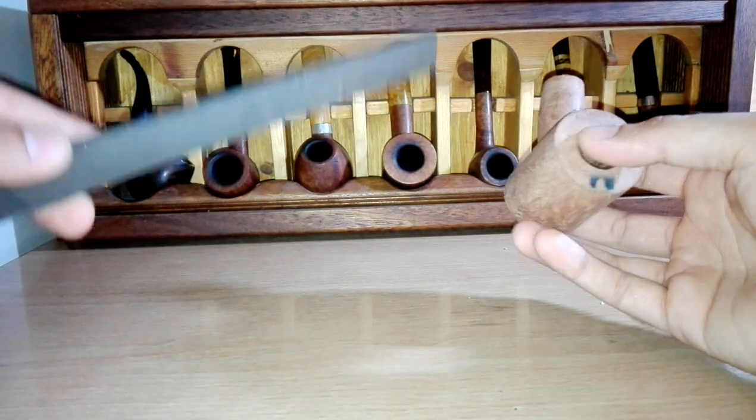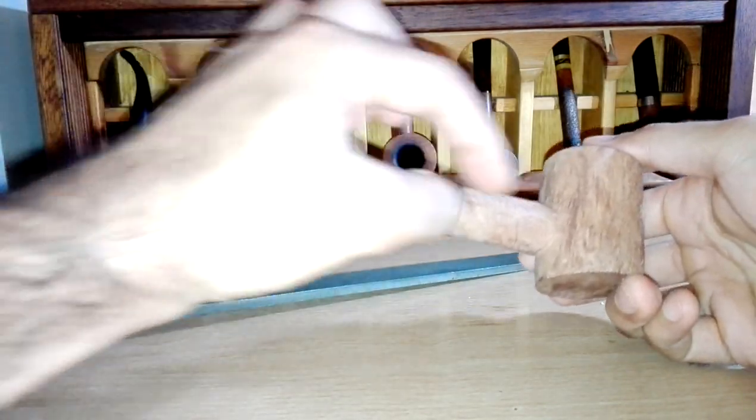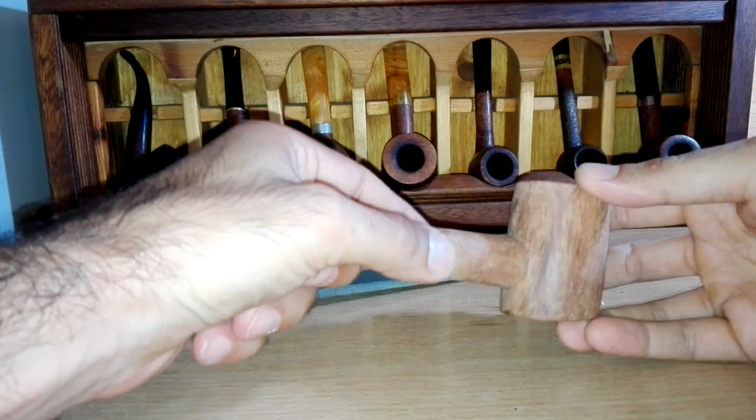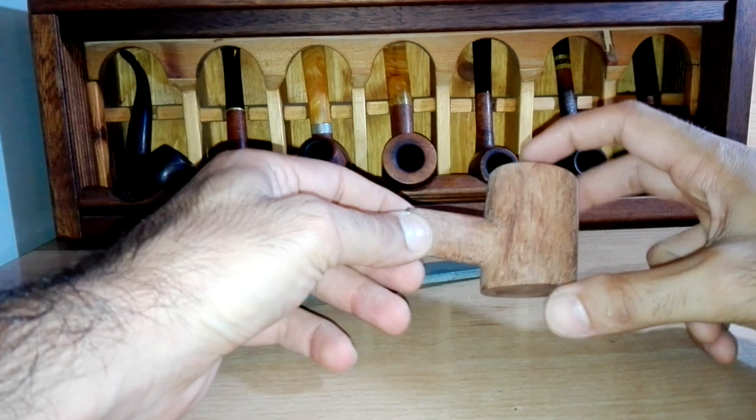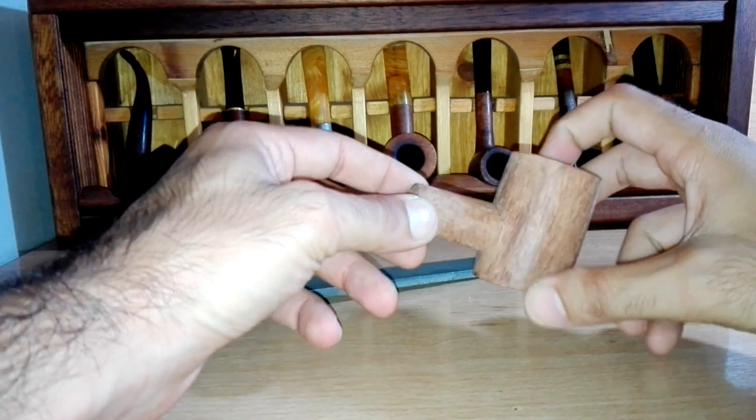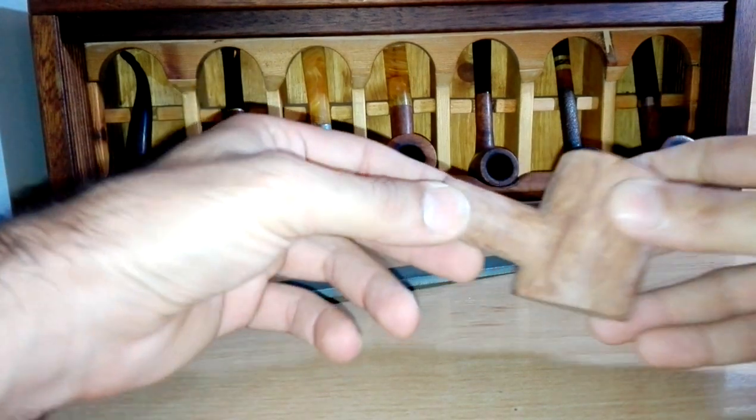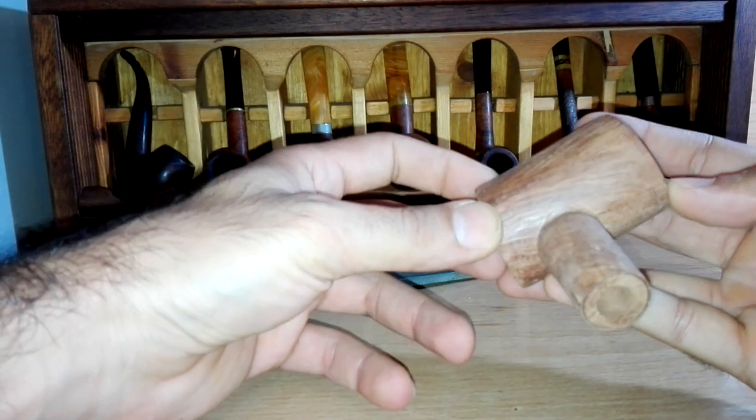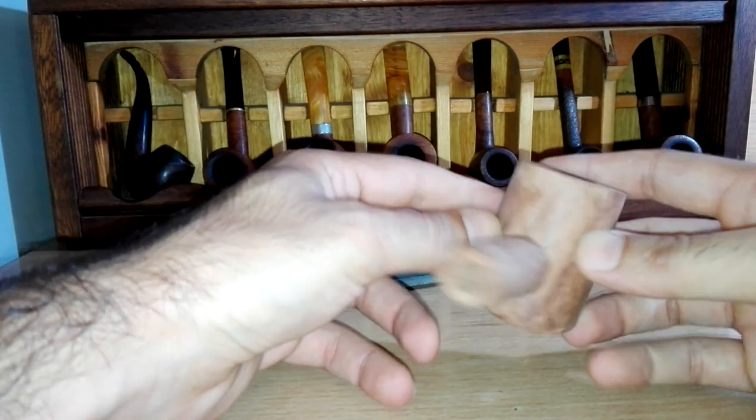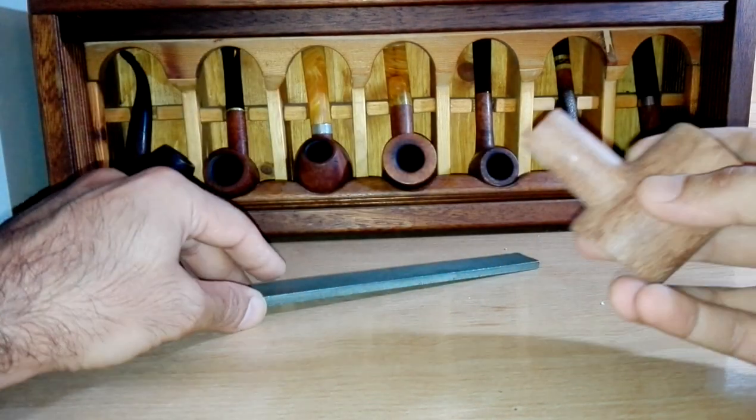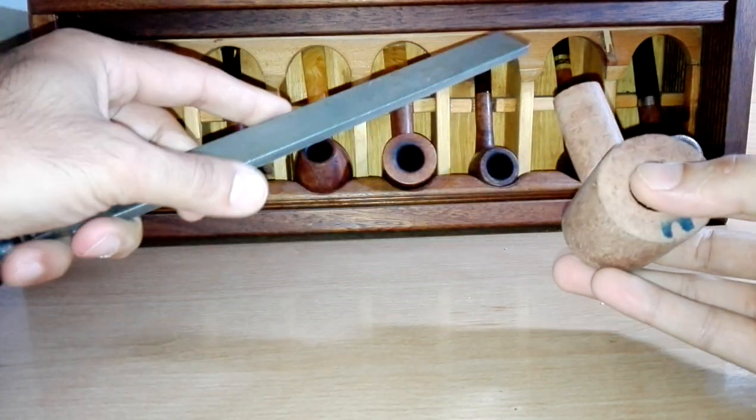And the most difficult part is when we reach this point where it looks like the shank and the bowl are two different pieces of briar, which is actually the same part. There's no glue, we haven't joined any two different parts here together. We have to be very careful at this point.